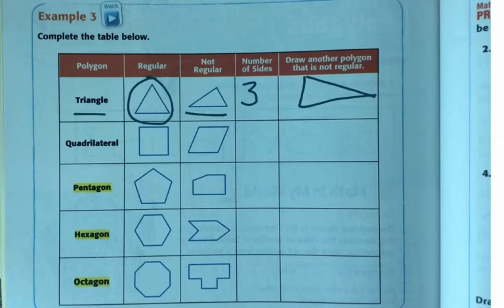A quadrilateral, so quadri means four sides. This square is regular. This rhombus is not because the angles are not the same. So they have four sides and now I need to draw a different polygon that is not regular. Go ahead and draw it yourself. I need to close it or it's not a polygon.